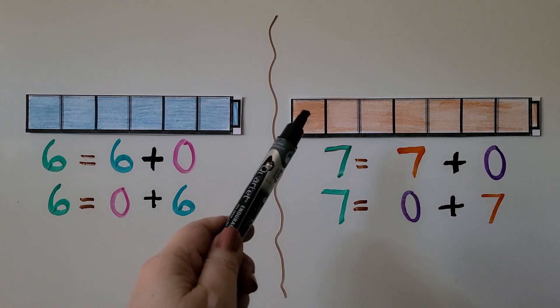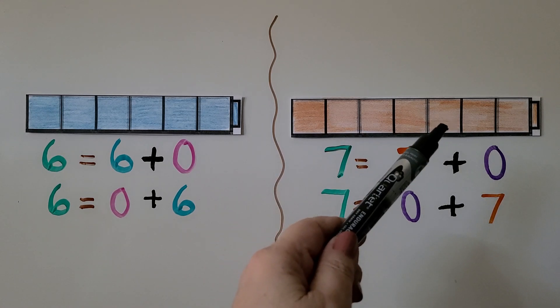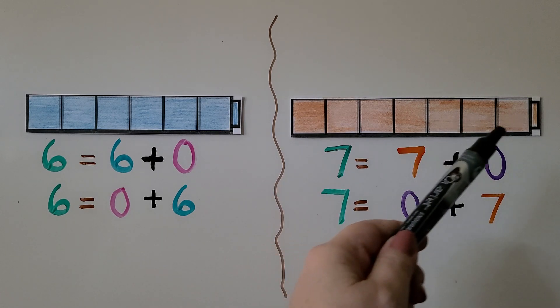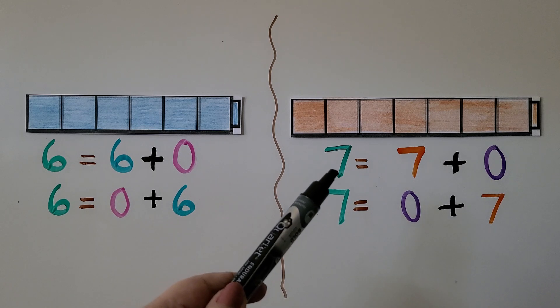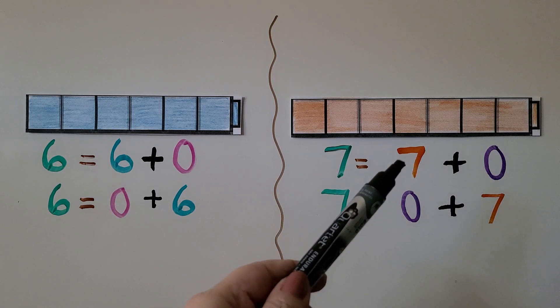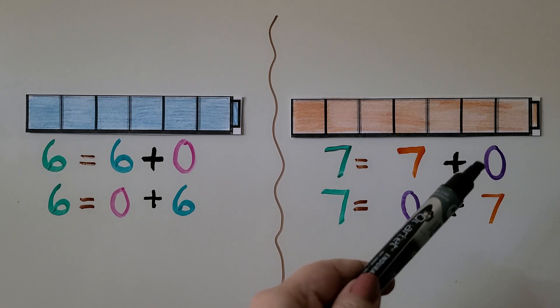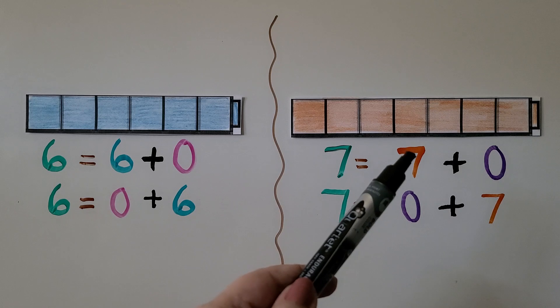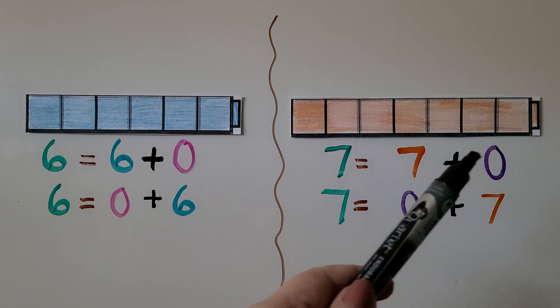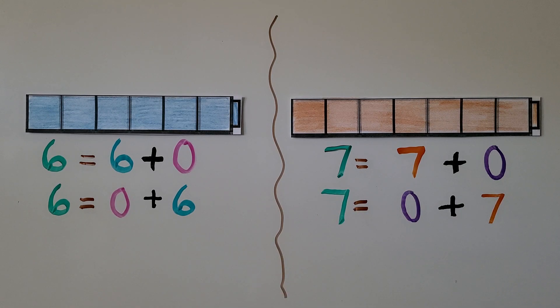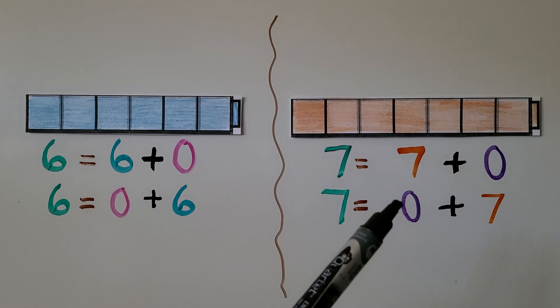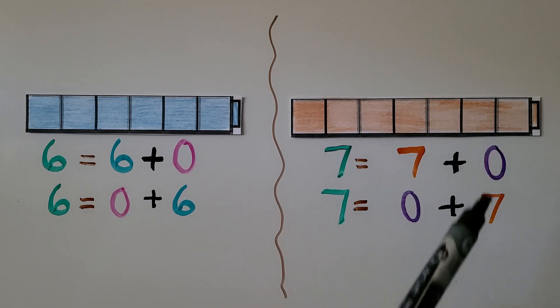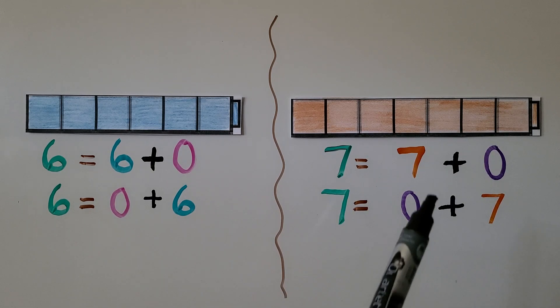Here we have 1, 2, 3, 4, 5, 6, 7 cubes in this cube train. They're all orange. We can say 7 is equal to 7 plus 0. We have 0 purple ones. We don't have any purple ones. We only have 7 orange, so it's 7 plus 0. It's 7 plus none. We can also say 7 is equal to 0 purple ones plus 7 orange ones. We just switched the numbers around.